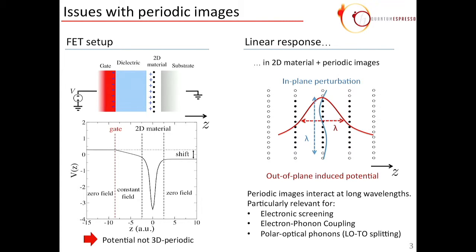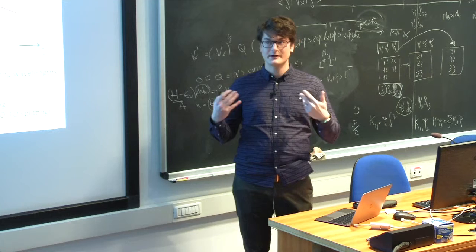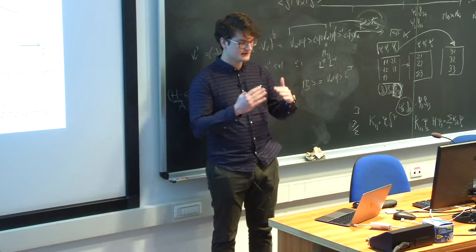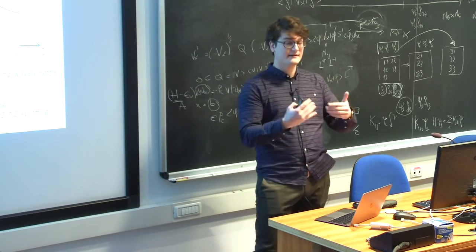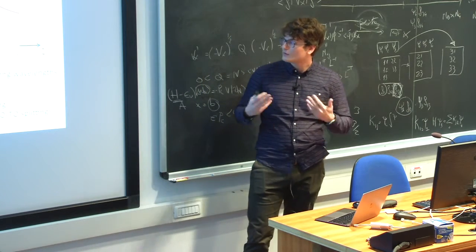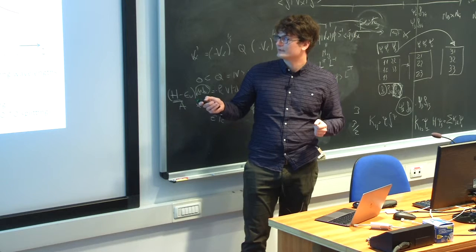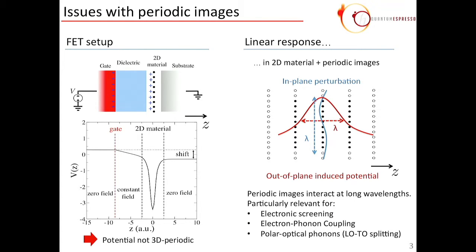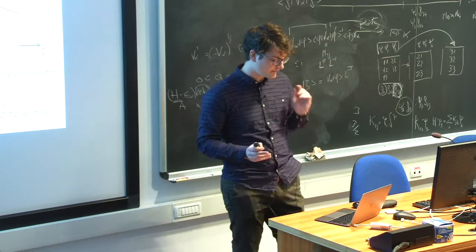With linear response, the issue is that when you perturb a two-dimensional electron gas at a certain wavelength lambda, it's going to respond by generating a potential that decays in the out-of-plane direction on the length scale of the same wavelength lambda. At long wavelength, when lambda becomes large, this induced potential can reach quite far away in the out-of-plane direction, and when it touches the periodic images, you get some interaction with periodic images. This is particularly relevant for electronic screening, electron-phonon coupling, and polar optical phonons.